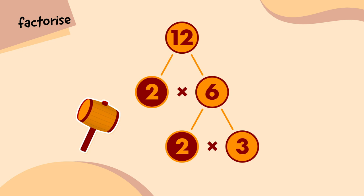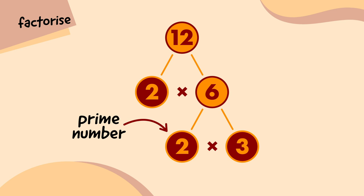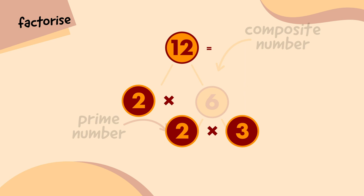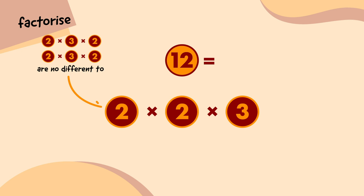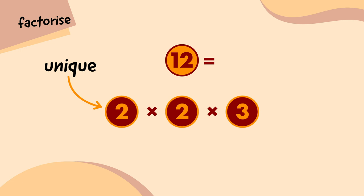We can multiply prime numbers together to create composite numbers. So for example, 12 is equal to 2 times 2 times 3. We just tend to write the numbers in ascending order — these are multiplied together, which is called a product. Every composite number, like 12, can be expressed as a unique product of prime numbers.